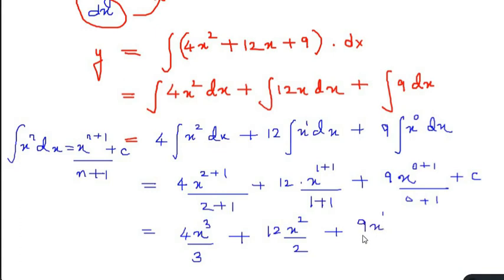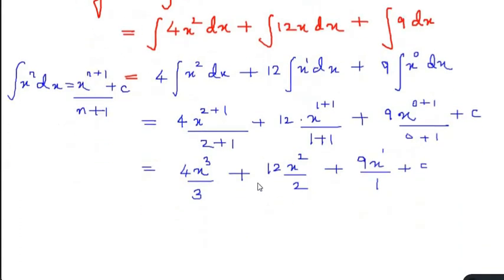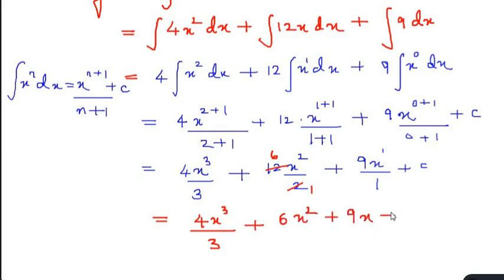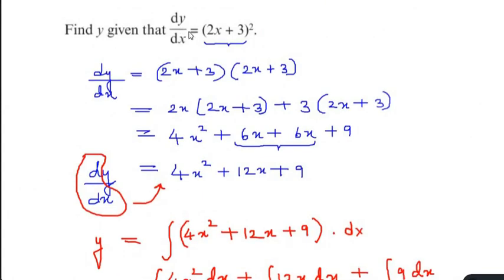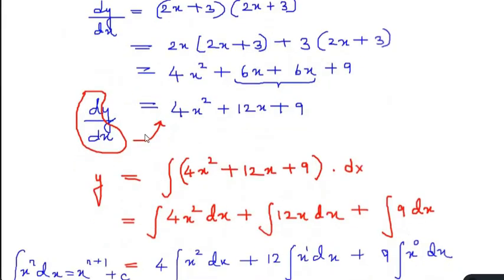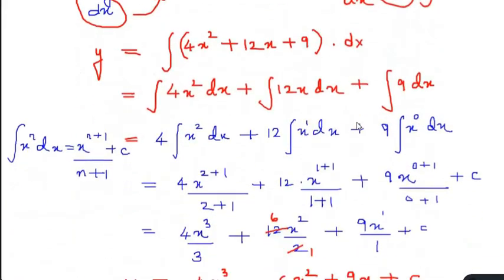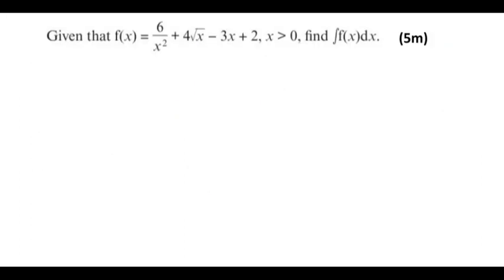Simplifying further: 4x cubed over 3, plus 12x squared over 2, plus 9x to the power of 1 over 1, plus C. Since 12 divided by 2 is 6, this becomes 4x cubed over 3 plus 6x squared plus 9x plus C. This is our answer for y. We converted differentiation into integration by taking dy/dx to the other side.